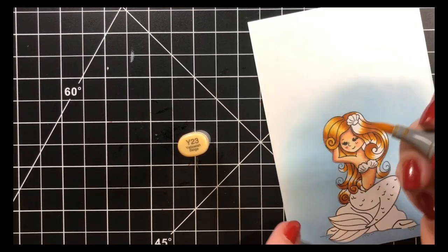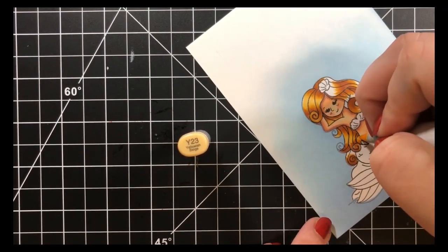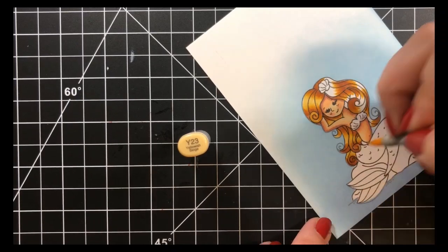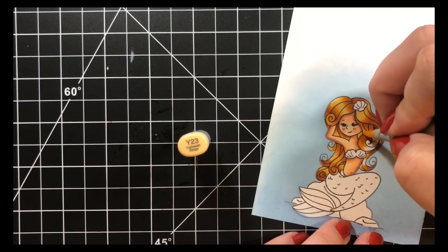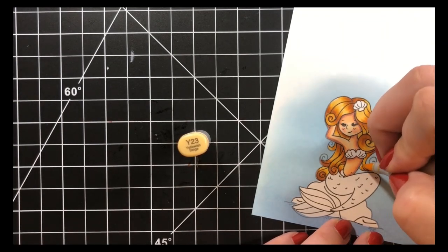Next, I will go in with my Y23 and basically cover up the entire area, including the E15 and the YR24 and just lightening up her hair all over the place.